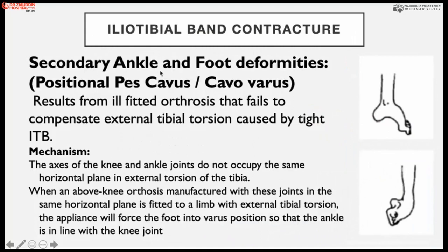Due to posture, two types of deformity occur: cavus deformity at the foot or equinovarus deformity. This is also produced by ill-fitted orthoses, which compensate for the external tibial torsion caused by the tight iliotibial tract. Thus the iliotibial tract produces cavus, cavovarus, or equinovarus deformity at the ankle joint.